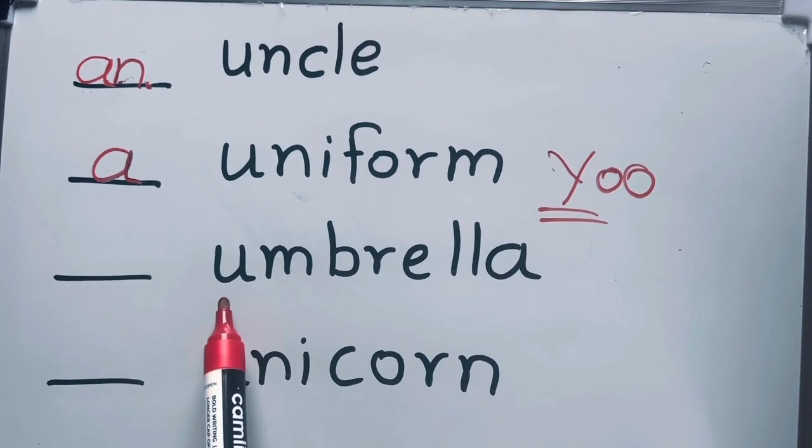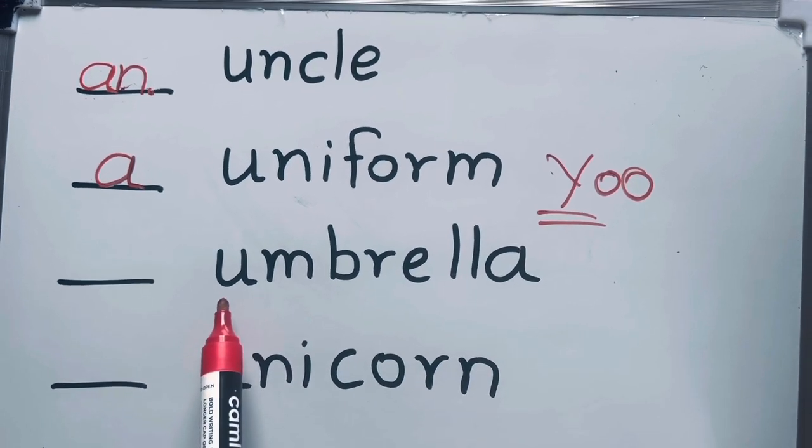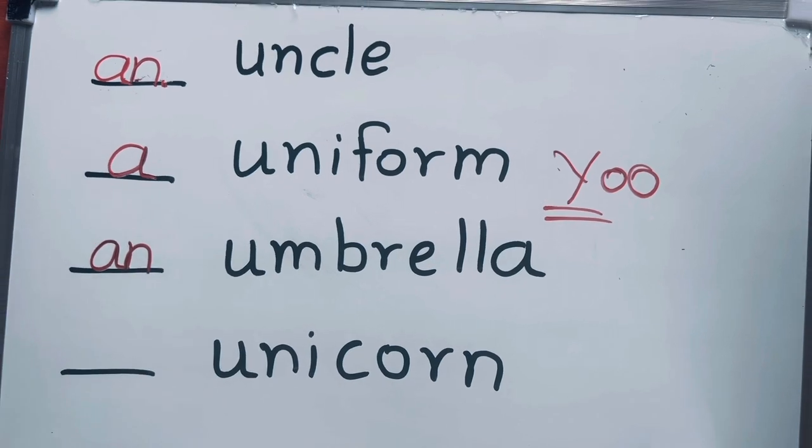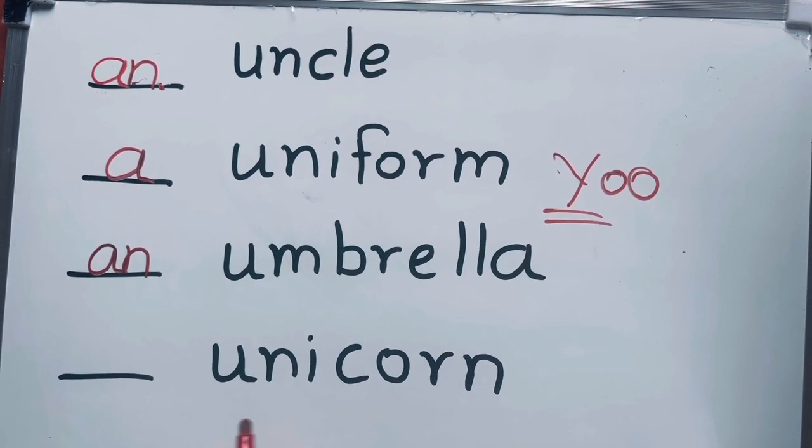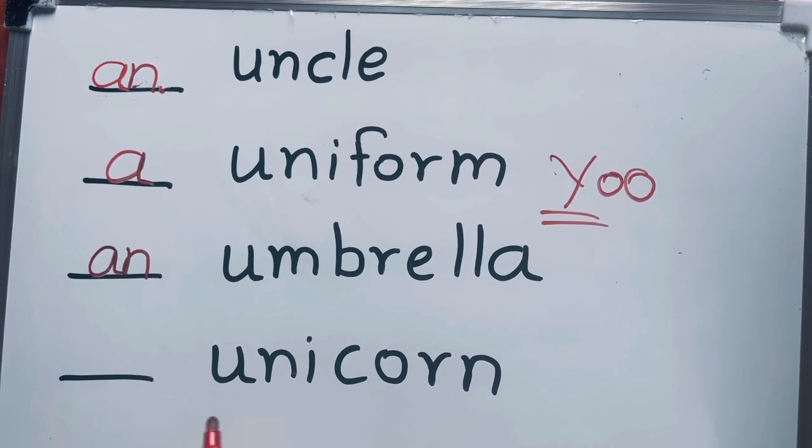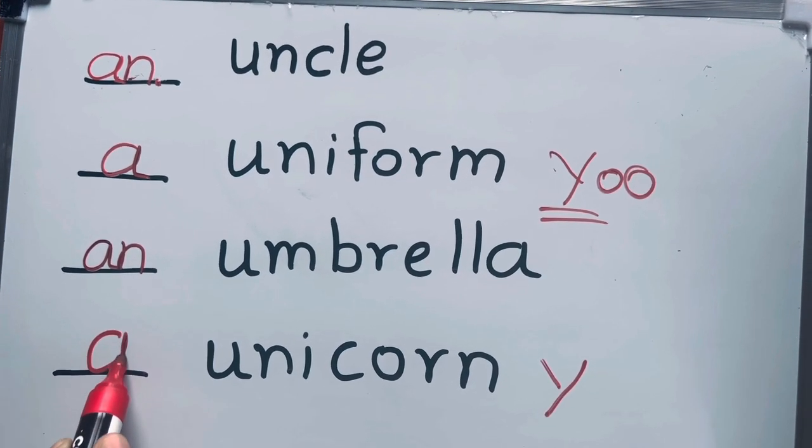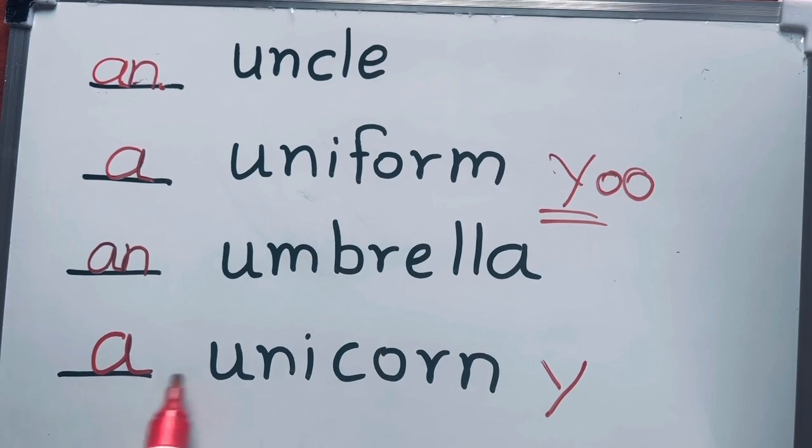Umbrella - this is a vowel sound, so an umbrella. Unicorn - U is a consonant sound here, so a unicorn, not an unicorn.